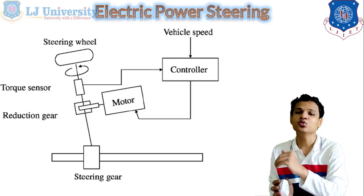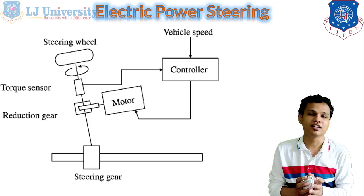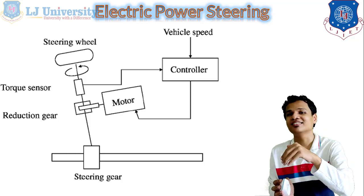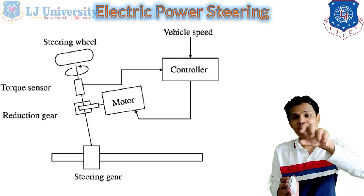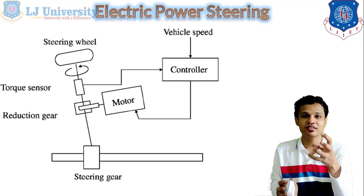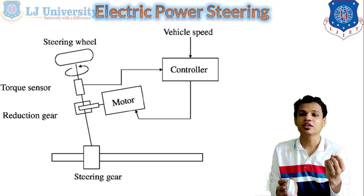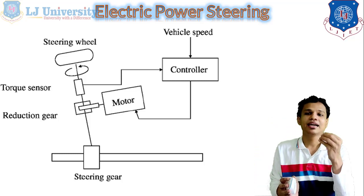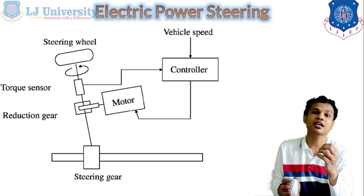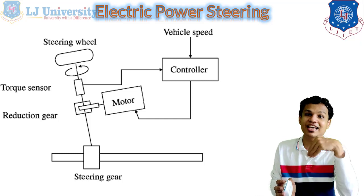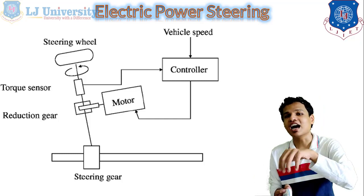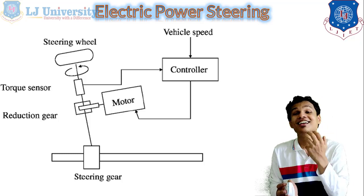In place of the pump, a motor is used to provide the required amount of torque multiplication. It works based on a torque sensor provided in the steering. When turning effort is applied, a torque is generated according to that effort, which is sensed by the torque sensor. The controller then signals the motor, which gets power from our auxiliary battery. That motor is connected with a reduction gear which provides speed reduction and torque multiplication, required for easier steering of the vehicle.